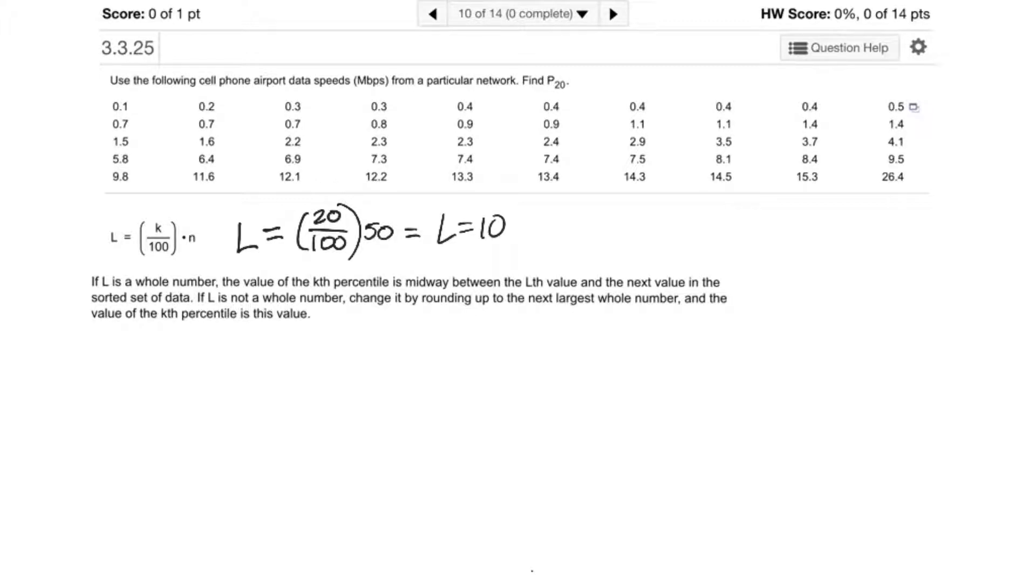If L is a whole number, the value of the Kth percentile is midway between the Lth value and the next value in the sorted set of data. If L is not a whole number, change it by rounding up to the next largest whole number, and the value of the Kth percentile is this value.